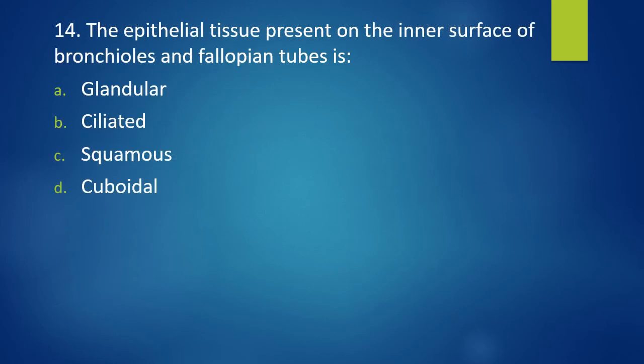Question 14. The epithelial tissue present on the inner surface of bronchioles and fallopian tube is glandular, ciliated, squamous, or cuboidal. The correct answer is option B. Ciliated epithelium.